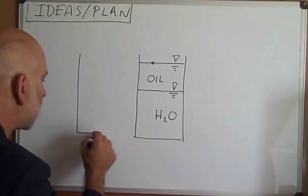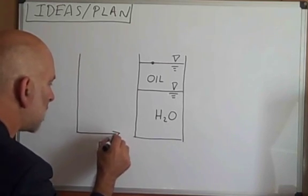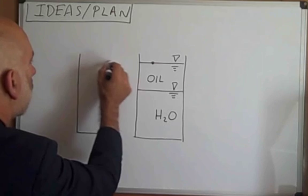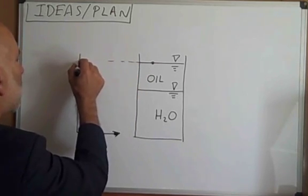If we make a plot of that, let's draw an axis like this. And let's put pressure on this axis and make increasing pressure go in that direction. And so, the pressure here is 0 gauge.